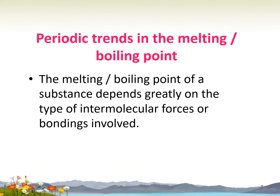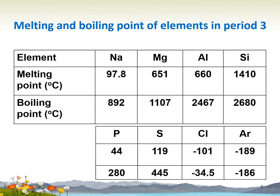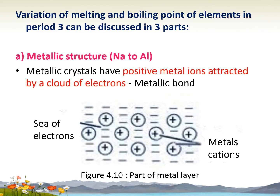Periodic trends in melting and boiling point depend greatly on the type of intermolecular forces or bondings involved. This table shows the melting and boiling points of elements in period 3. The variation can be discussed in three parts. The first is metallic structure, which covers sodium to aluminium. Metallic crystals have positive metal ions attracted by a cloud of electrons — this bond is called a metallic bond, as shown in figure 4.10.